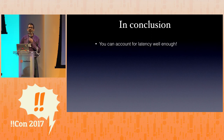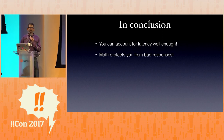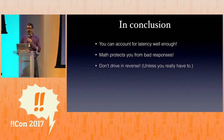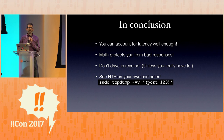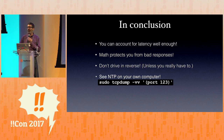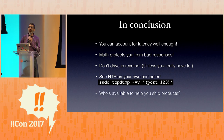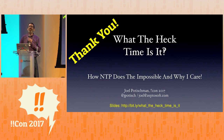In conclusion: you can account for latency well enough — not perfectly, but well enough, and that is sufficient. Math protects you from bad responses; if you are on guard against terrible things being told to you on the internet — also a good rule in general — you can protect yourself from that. Don't drive in reverse unless you really have to. And you can see NTP on your own computer: sudo tcpdump -vv port 123, and you can watch your computer every 64 seconds make these tiny little adjustments. I have Julia Evans to thank for this tip. And remember, who's available to help you ship products? This guy. Thank you very much.